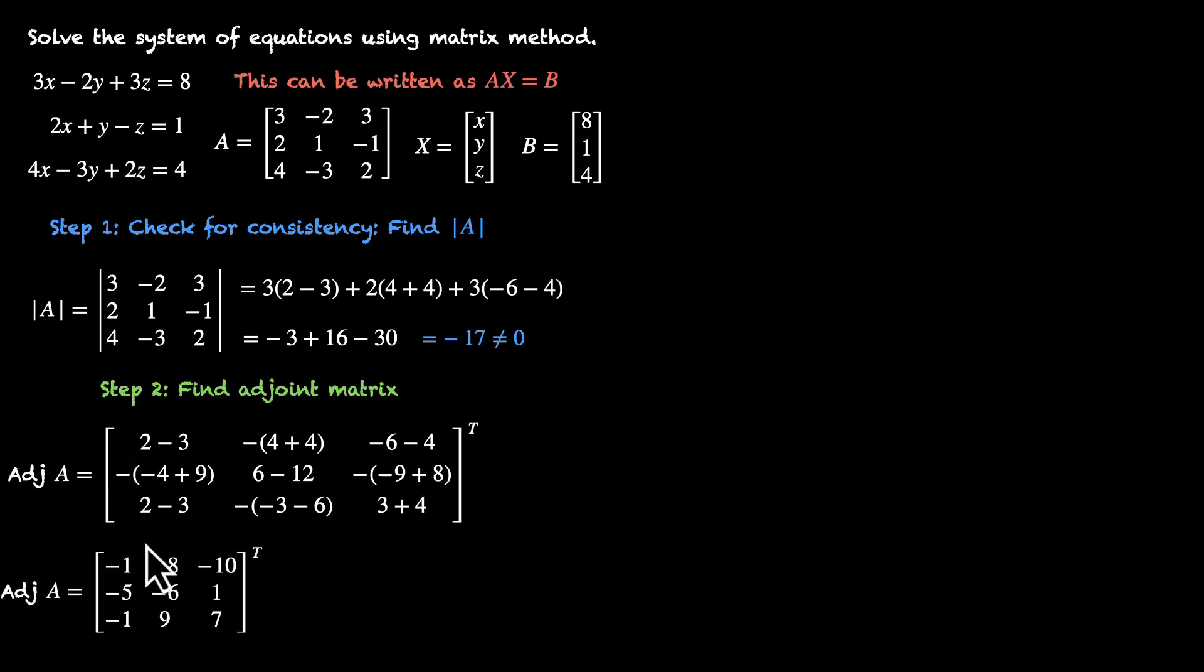Let's take the transpose. We'll get the adjoint. So let's simplify this. We have 2 - 3, that's -1, -4 + 4, that's -8, -6 - 4, that's -10. This one is 9 - 4 is 5, and this is -5. 6 - 12 is -6. -9 + 8 is -1, with the negative sign, so this becomes 1. 2 - 3 is -1. -3 - 6 is -9, with the negative sign, it becomes 9. 3 + 4 is 7. Now let's take the transpose. We have -1, -8, -10, -5, -6, 1, -1, 9, 7. So we now have the adjoint.